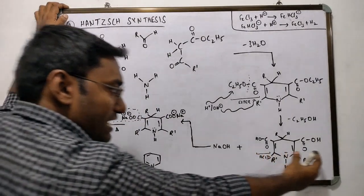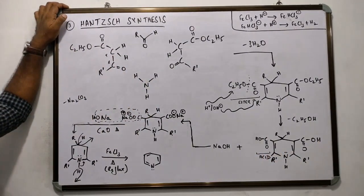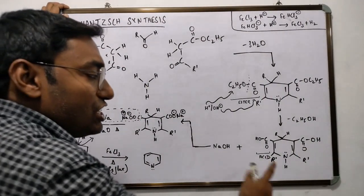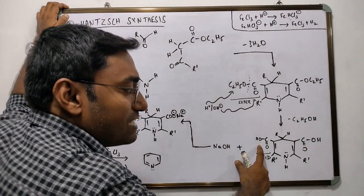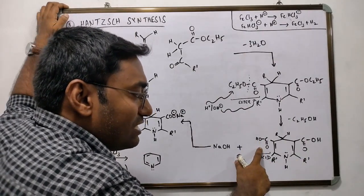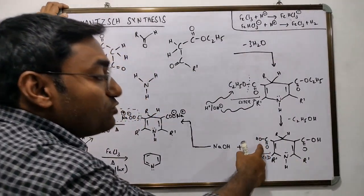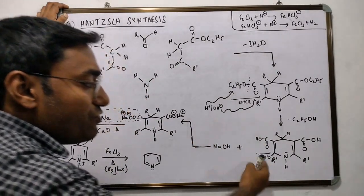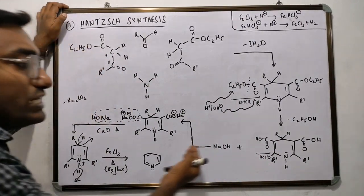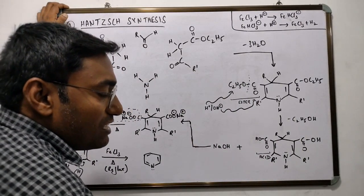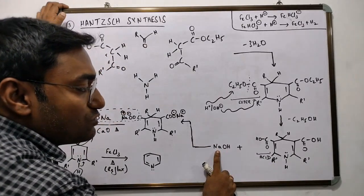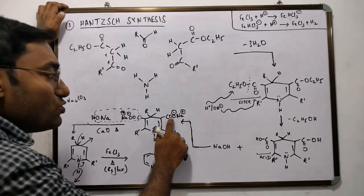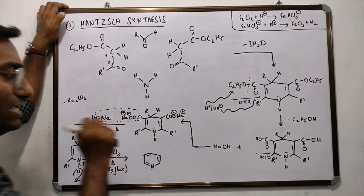To remove this dicarboxylic acid, one has to subject it to decarboxylation. But decarboxylation is shown by the salts of acid and not the acid itself. So therefore, one has to first convert it into its salt. As this is an acid, if you treat it with a base, you get salt plus water. Therefore, we treat this acid with sodium hydroxide, and that gives us the sodium salt of carboxylic acid on both sides.